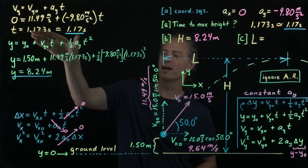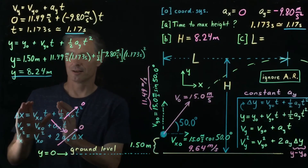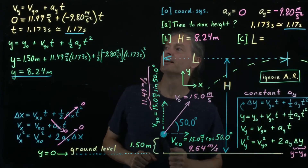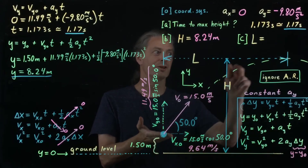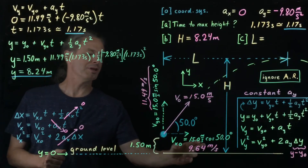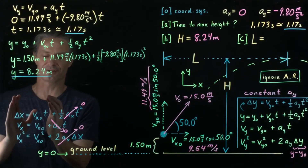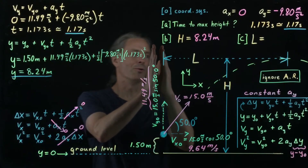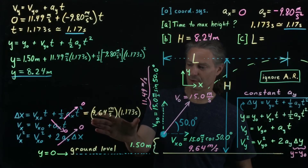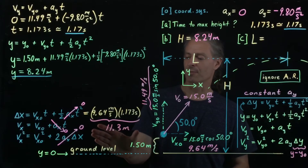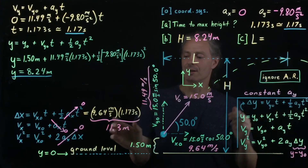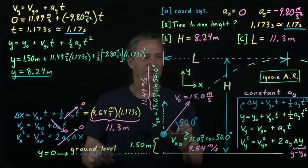With the time to maximum height in hand, we can now solve part C. Using the horizontal displacement equation with v_x0 = 9.64 m/s and t = 1.173 s, the ball travels 9.64 × 1.173 = 11.3 meters horizontally between launch and maximum height.